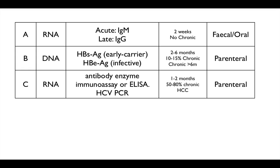Hepatitis C is an RNA virus. It can be quite difficult to detect but you use antibody assays and PCR. It has a similar mode of transmission to hepatitis B, with a shorter incubation period of 1–2 months. C stands for chronic and for HCC — hepatocellular carcinoma — which it can unfortunately cause.